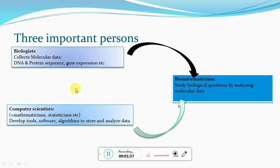There are three main important persons in the field of bioinformatics. One is the biologist, who does lab experiments and collects DNA and protein sequences, gene expression data — basically collecting molecular data. Another is the computer scientist, essentially a mathematician or statistician, who develops tools, software, and algorithms to store and analyze data. The third and most important one is the bioinformatician, who studies biological questions by analyzing molecular data.